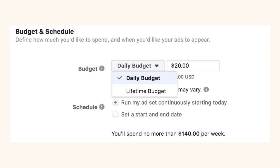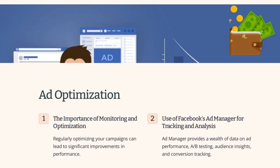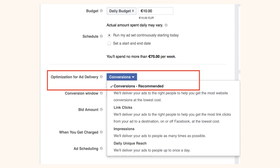In the dashboard, there's a dropdown for daily budget or lifetime budget. The next topic is optimizing your ads — monitoring and optimizing means you're being very efficient and effective with your ad dollars. When you set up Facebook Ads Manager for tracking and analysis, you'll have data for A/B testing those campaigns, audience insights, and conversions.